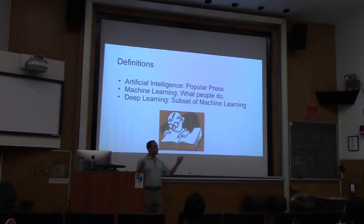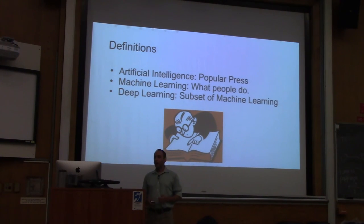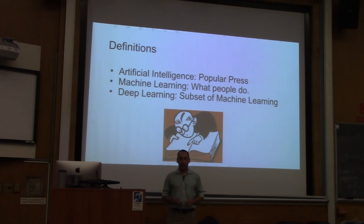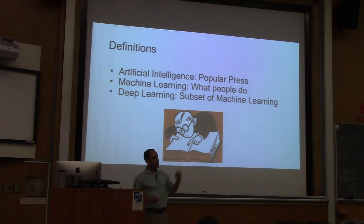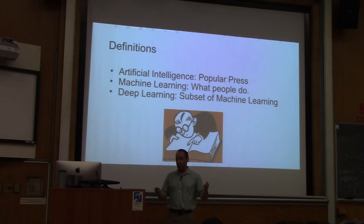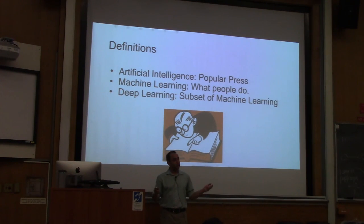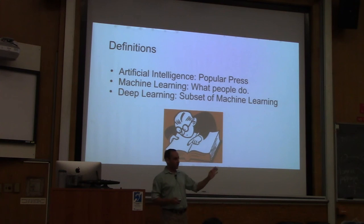Quick intro. There are various terms people use: artificial intelligence, machine learning, and deep learning. Artificial intelligence is a term you read about in the popular press, but most people who do machine learning don't typically use it — they're really referring to a long-term vision of general intelligence like sci-fi movies, algorithms just as capable as humans on everything. Machine learning is a set of mathematical algorithms that are powerful but still limited. Deep learning is a particular subset of machine learning that uses neural networks.